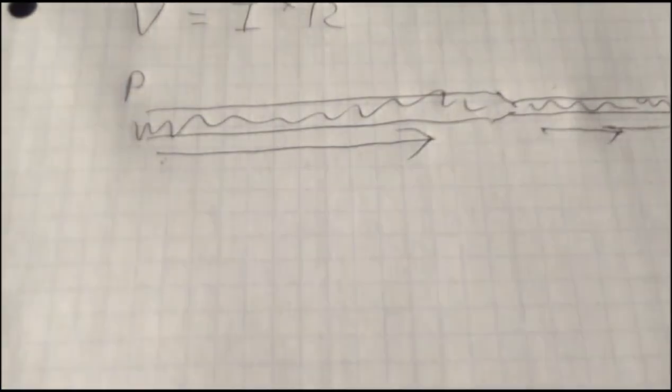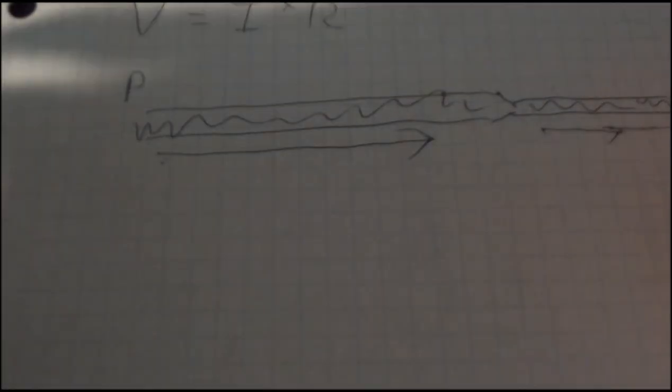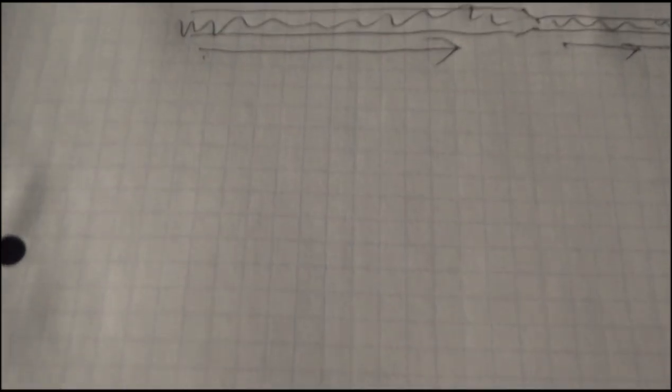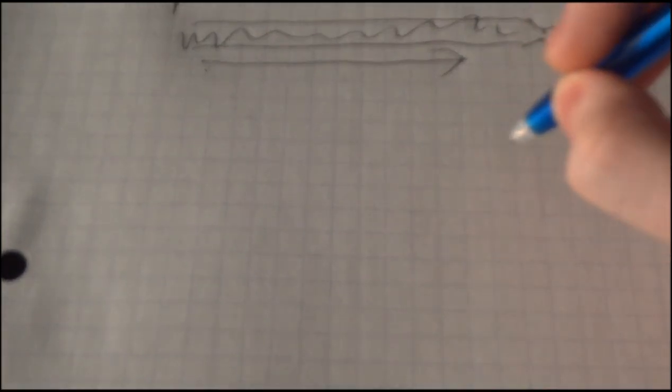So now that we've kind of covered using water as an example to show how a basic circuit works, now we can start talking about Ohm's law a little bit more. Because a basic circuit, well let's draw a basic circuit here.